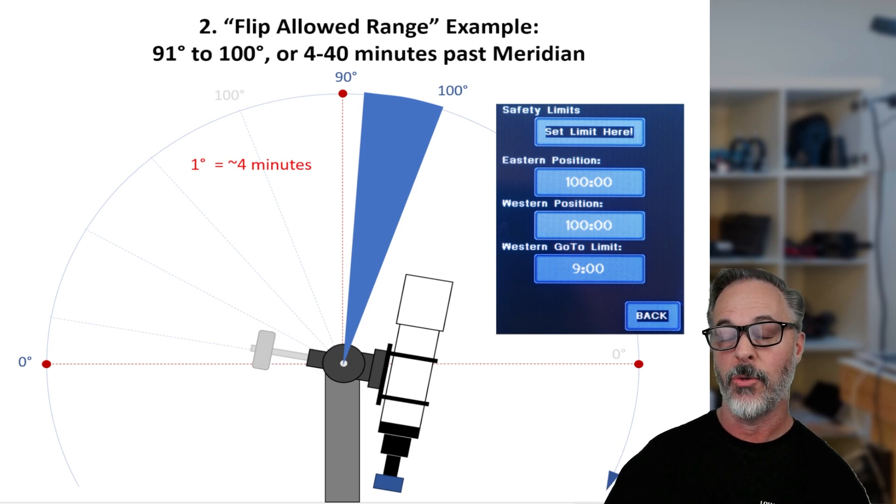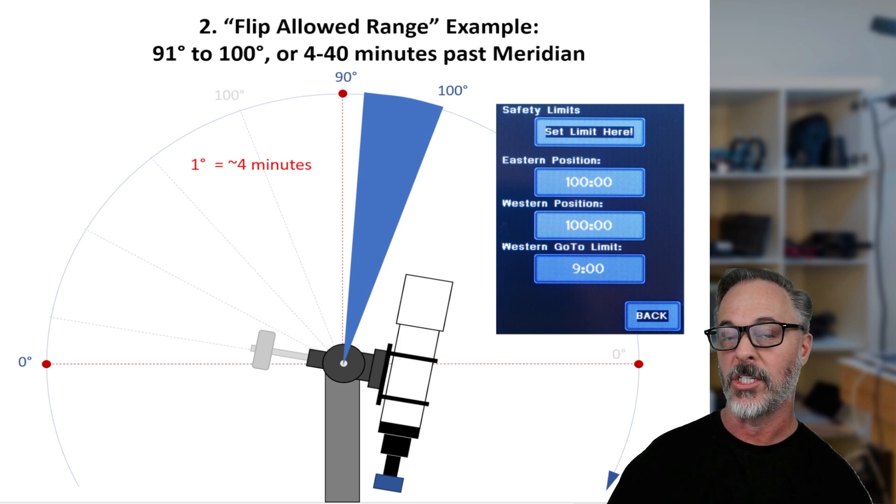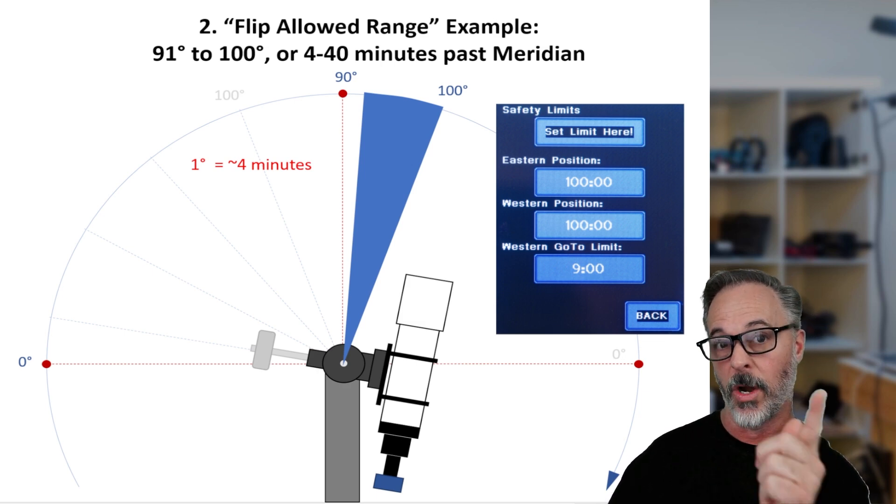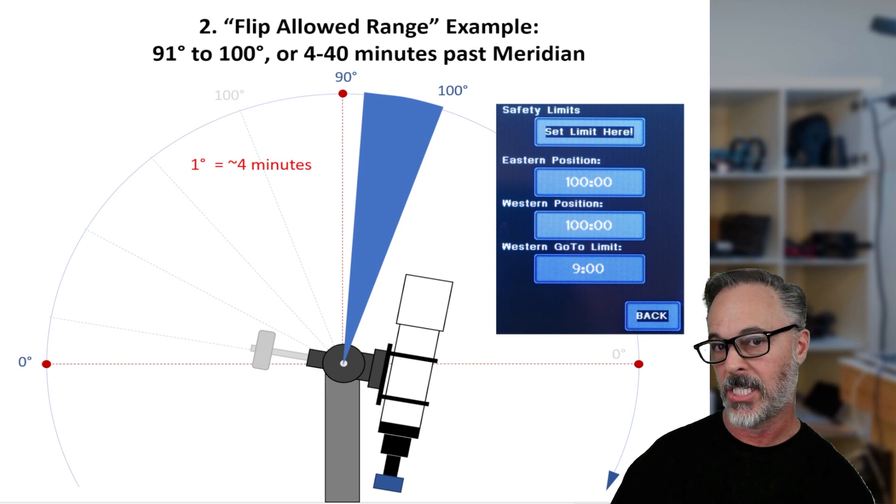Now, most of you probably know that one degree of sky angle equals four minutes of clock time. So it takes four minutes to go one degree or at sidereal time to go one degree across in the sky. So if we do a quick calculation, those nine degrees are going to be four to 40 minutes past the meridian.